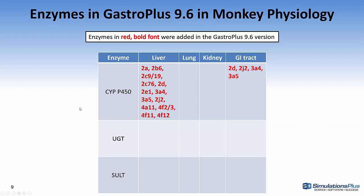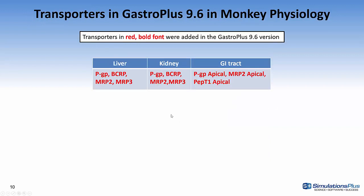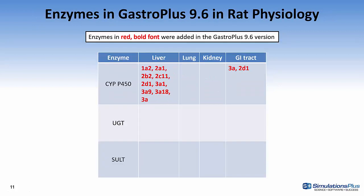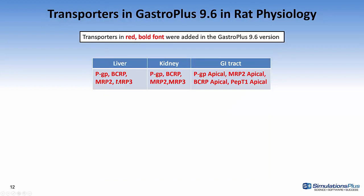For monkey physiology, the currently defined enzymes are in the liver and GI tract, and they were all added for cytochrome P450. The transporters in monkey physiology are in the liver, kidney, and the GI tract — again, newly added in 9.6. For rat physiology in the liver, we added a number of cytochrome P450s and also along the GI tract. The transporters in the rat include PGP, breast cancer-resistant protein, MRP2, and MRP3 in the liver. In the kidney, we have PGP and a couple of other transporters. And similarly in the GI tract, we have MRP2 apical, BCRP apical, and PEPT1 apical.